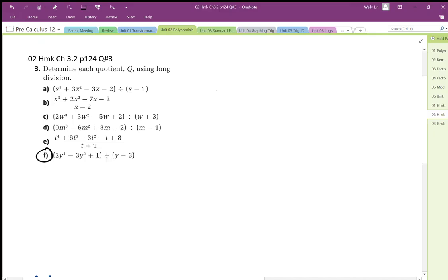So when we set up the long division, we have to make sure that we have spacers for those missing powers. So for the missing power of 3, I'm going to put 0y cubed, 3y squared, we're going to have 0y, and then plus 1.